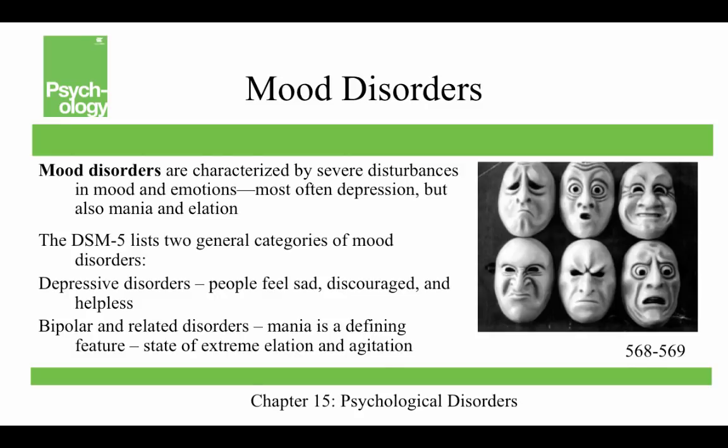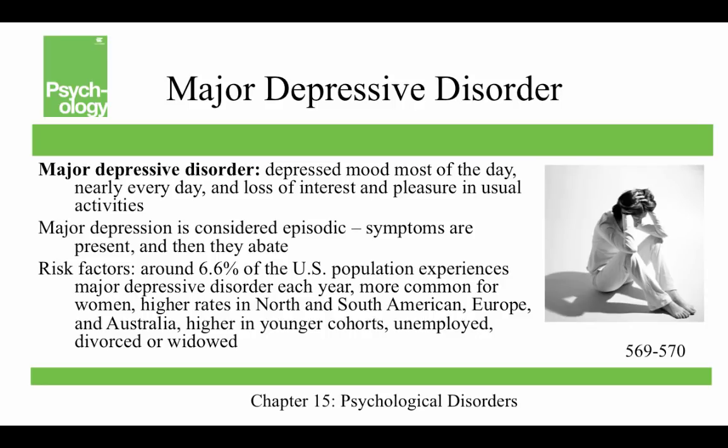Mood disorders are characterized by severe disturbances in mood and emotions — most often depression, but also mania and elation. The DSM-5 lists two general categories: depressive disorders, where people feel sad, discouraged, and helpless, and bipolar and related disorders, which include mania as a defining feature — a state of extreme elation or agitation.